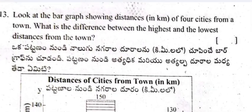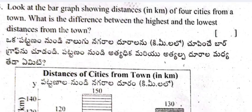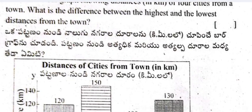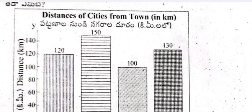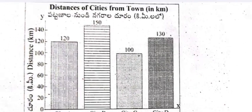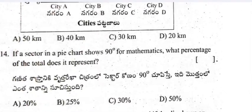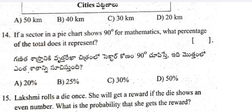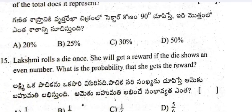Question 13: Look at the bar graph showing the distance in kilometers of four cities from a town. What is the difference between the highest and the lowest distances? The highest is 150 and the least is 100, so the difference is 50 kilometers. Question 14: If a sector in a pie chart shows 90 degrees for mathematics, what percentage of the total does it represent? It represents 25 percent.